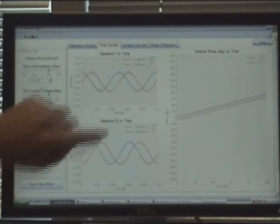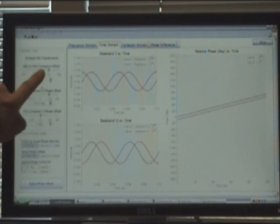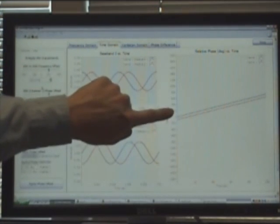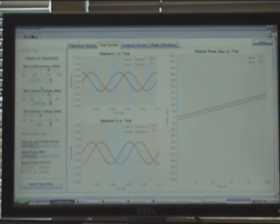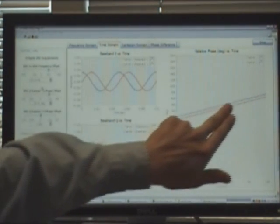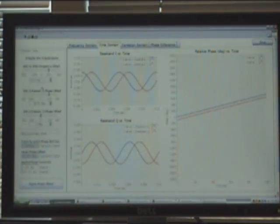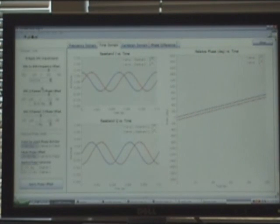Now one other graph to point out is this phase versus time. Because I've applied a frequency offset, I see that on a sample-by-sample basis, my phase offset is increasing over time. A frequency offset is basically a phase versus time shift. Also, I see this discrete time delay between my red and blue traces, illustrating that the phase offset between each channel is constant over time.